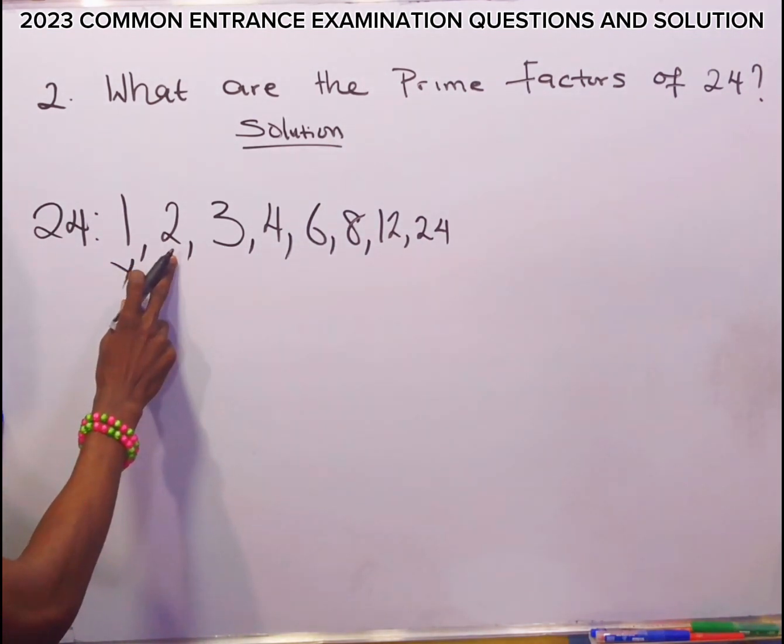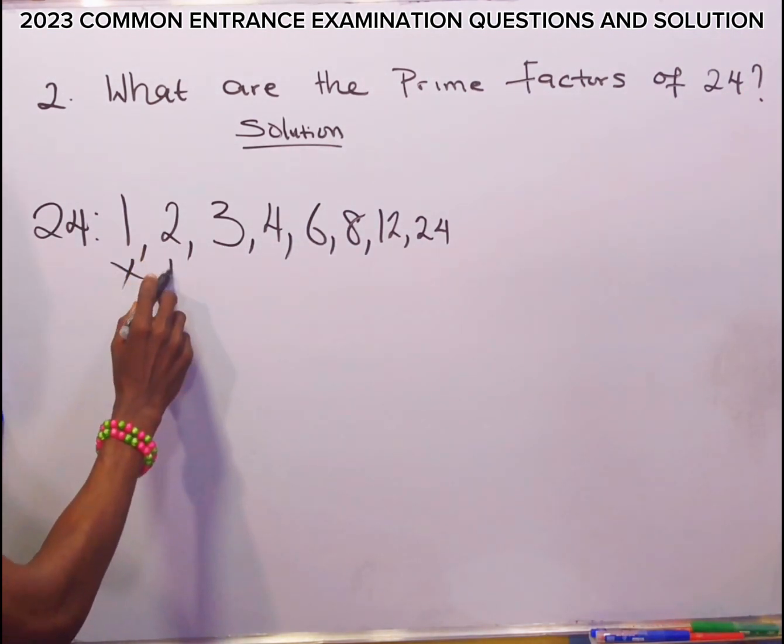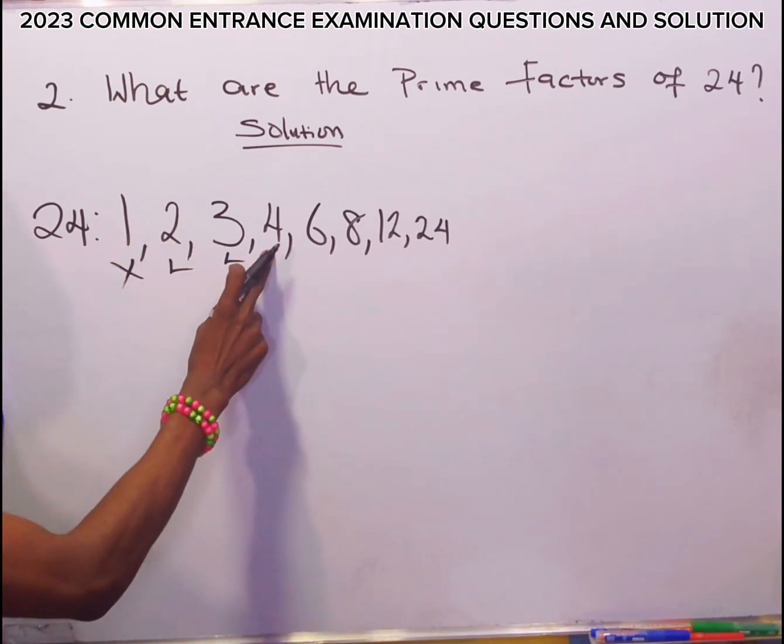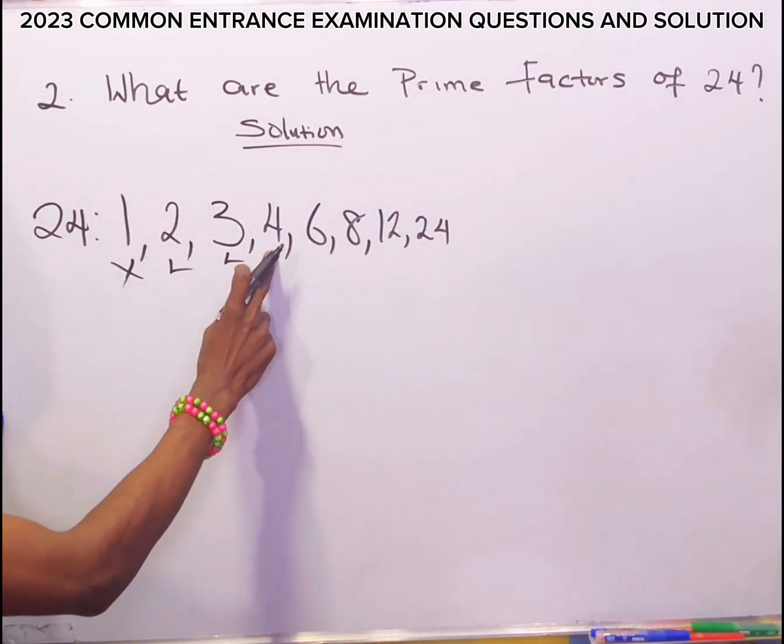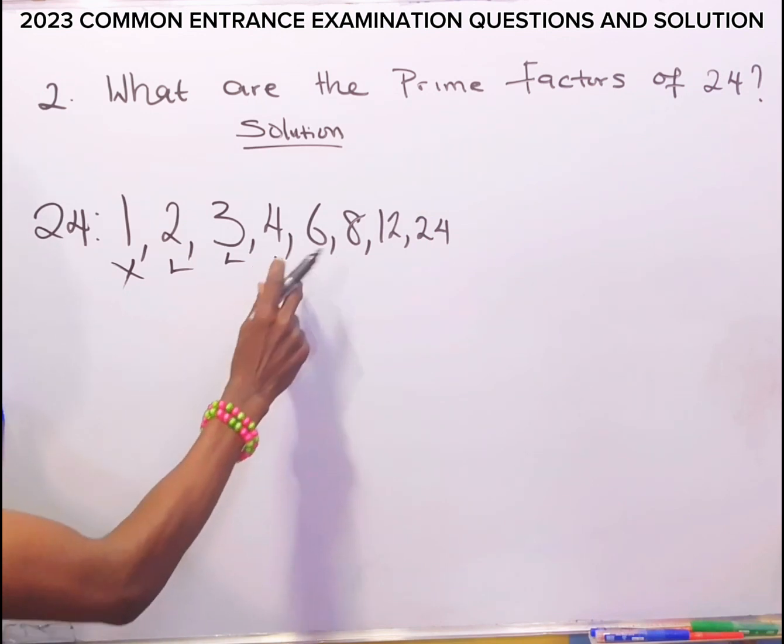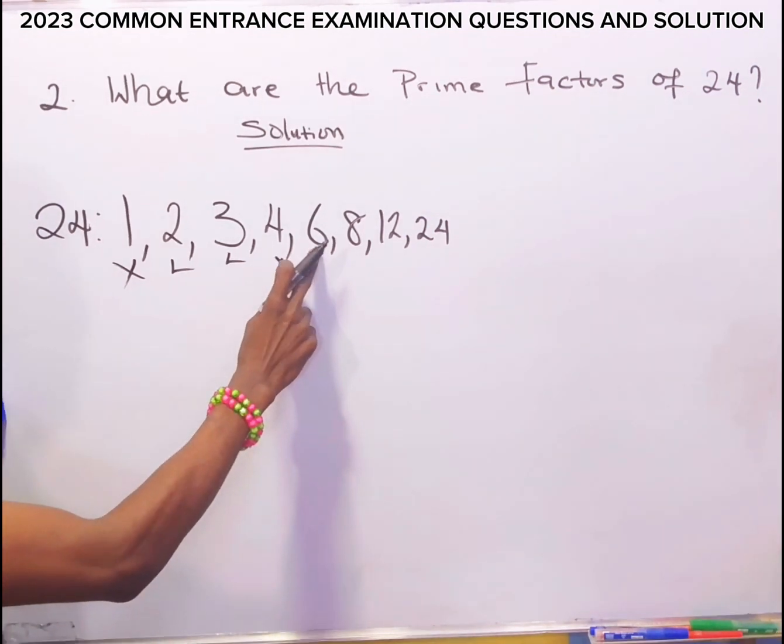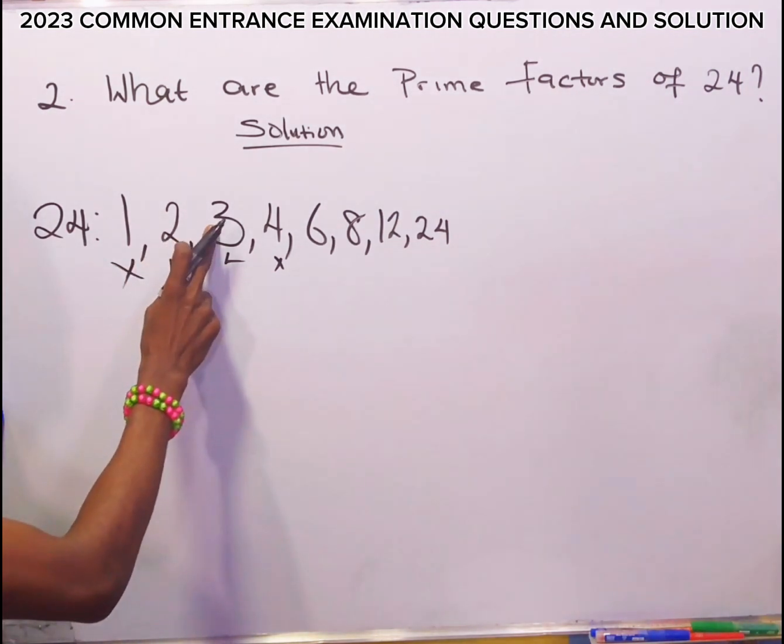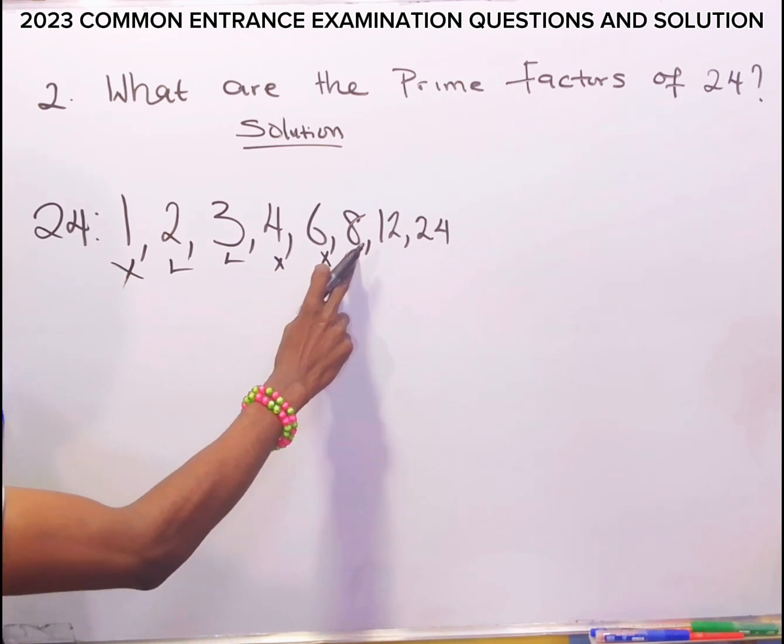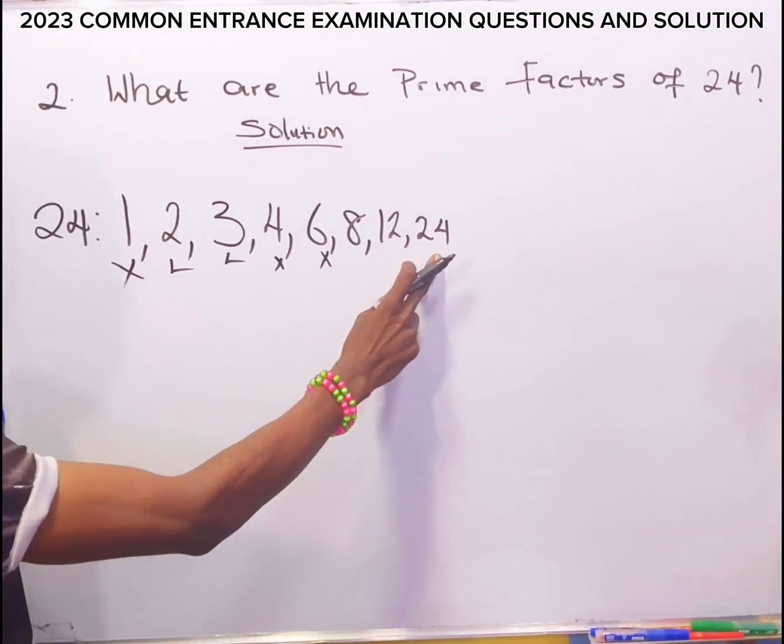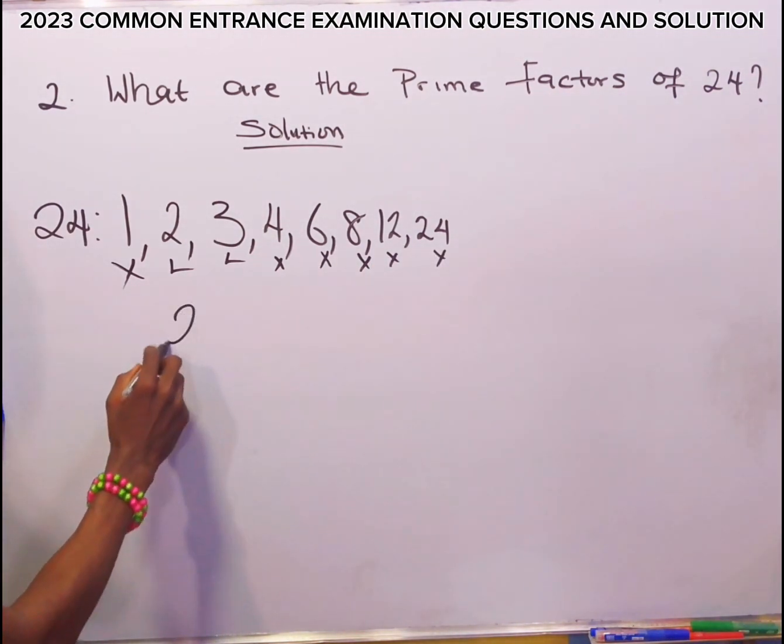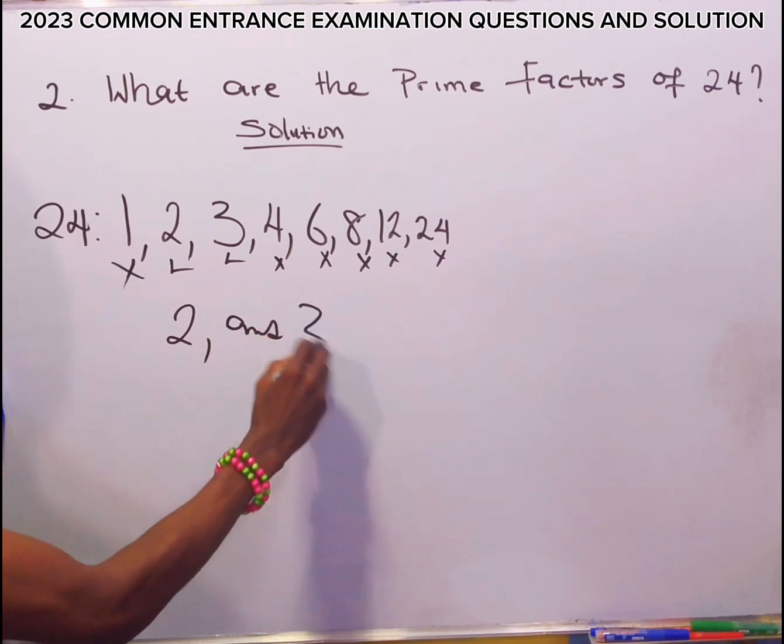2 is a prime number because 2 can divide 1 and 2 can divide 2. 3 is a prime number because 3 can divide 1 and 3 can divide 3. 4 is not a prime number because 4 can divide 1, 4 can divide 2, and 4 can divide 4. 6 is not a prime number. 8 is not a prime number also. 12 is not a prime number and 24 is not a prime number. So the only prime numbers we have here are 2 and 3.